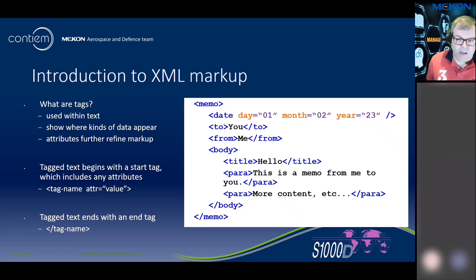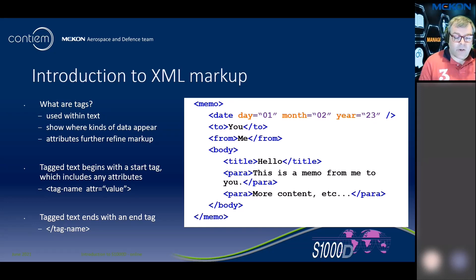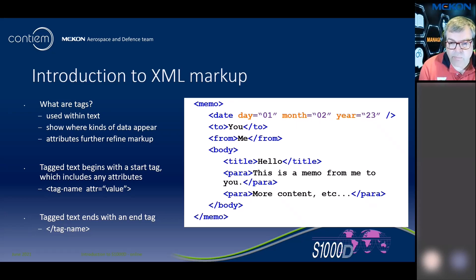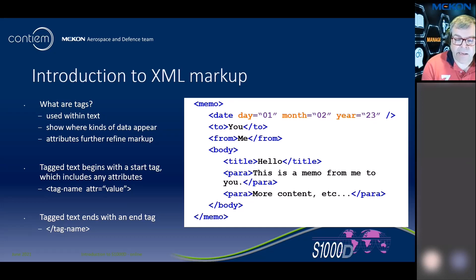Tags can be nested inside each other, but you can't have tags overlapping — you don't start one inside another and finish it inside yet another. Always think of them as containers and you won't go far wrong. When you look at raw XML, people often indent it. The system doesn't need it indented, but from a visual point of view it can help you understand where your opening and closing tags are and where your containers sit.